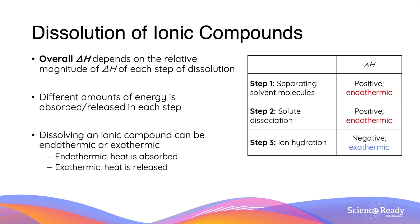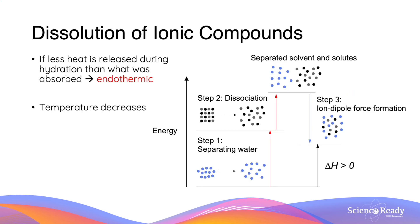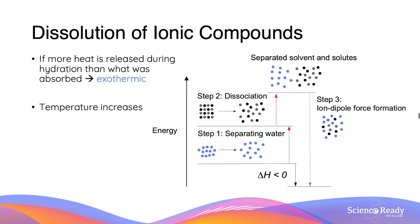So we know that step 1 is endothermic, step 2 is also endothermic, and step 3 is exothermic. What does this mean for the overall thermochemical nature of the reaction? The answer is that it depends. The overall enthalpy change is determined by the sum of each of the three steps. If less heat is released during hydration than is absorbed, the reaction is endothermic and the temperature decreases. Conversely, if more heat is released than absorbed, the reaction is exothermic and the temperature increases.